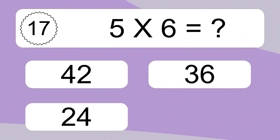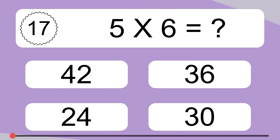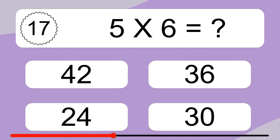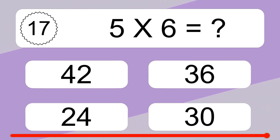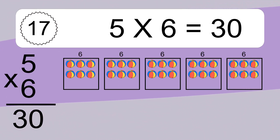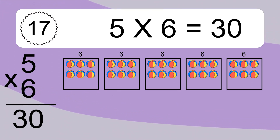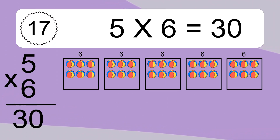5 times 6 equals what? 5 times 6 equals 30. We have 5 boxes, and each box has 6 colorful balls inside. If you count all the balls in all the boxes together, you will have 5 times 6 balls. This equals 30 balls.